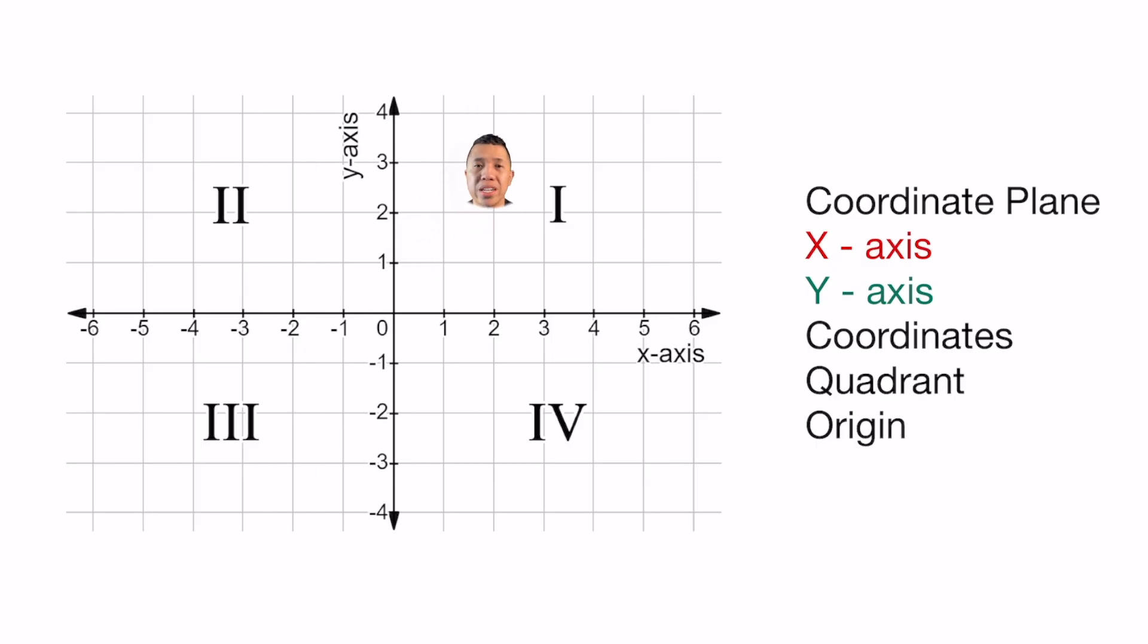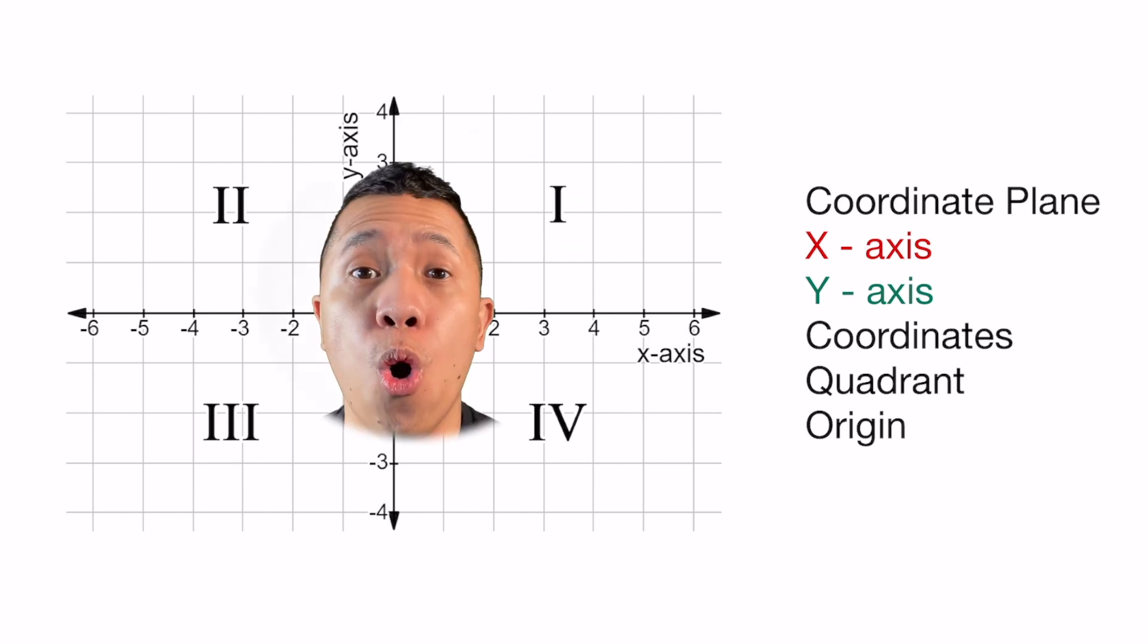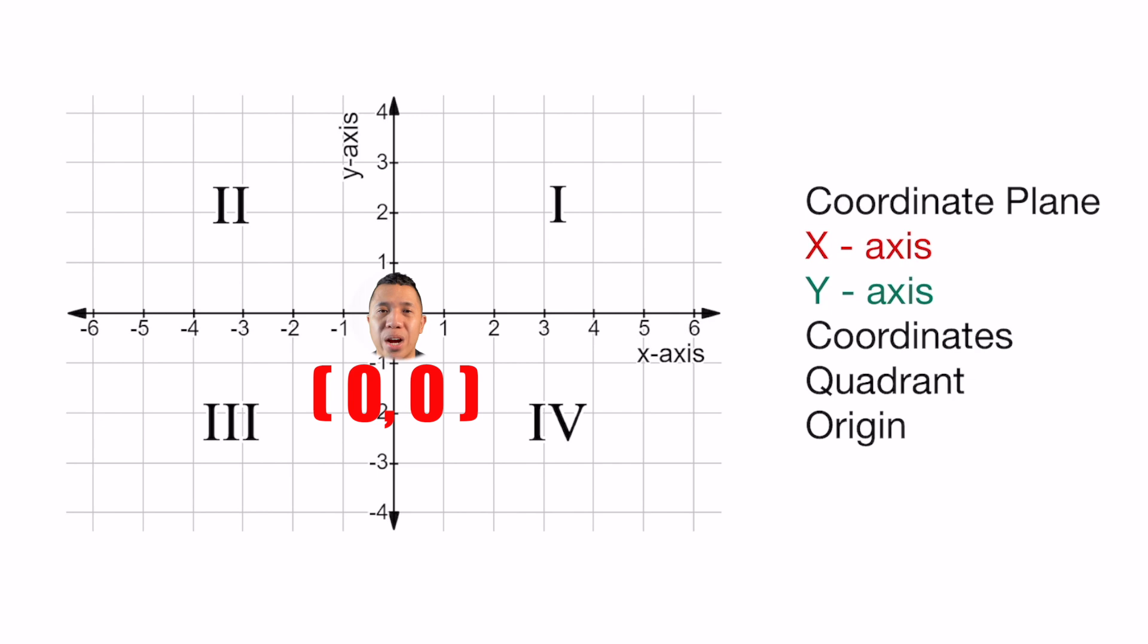A coordinate is just a point. A point, a coordinate, has an x number and a y number. The origin, oh, that's the center of the graph.